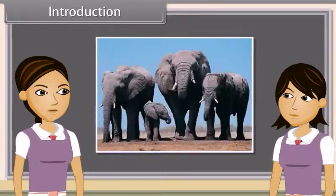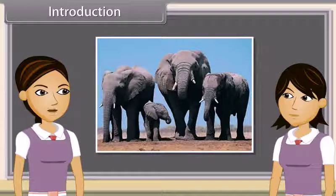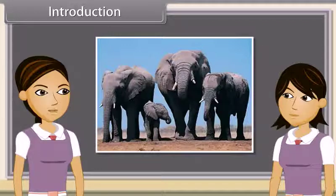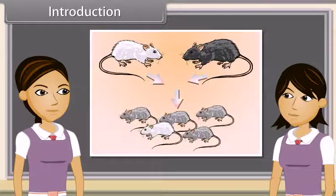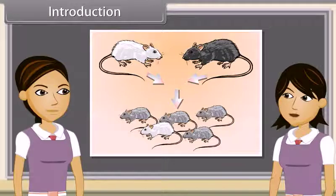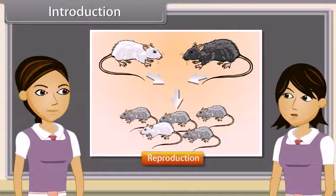Reproduction is the ability of all organisms to produce young ones similar to themselves in most of their characters. We can also say the process by which a species is continued is called reproduction.